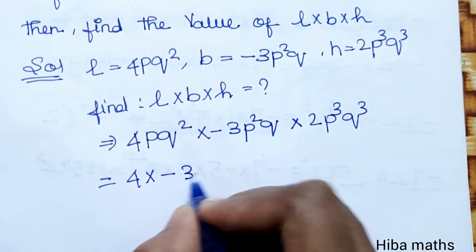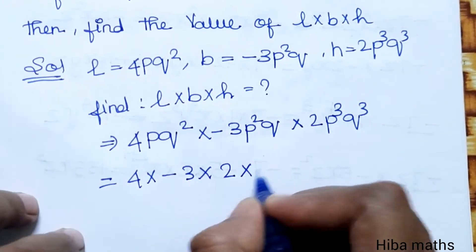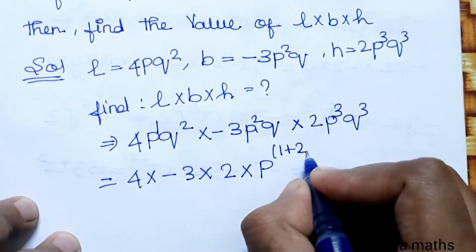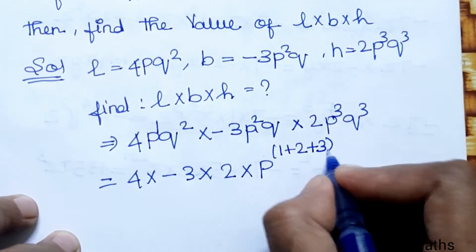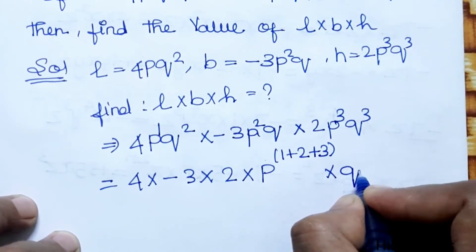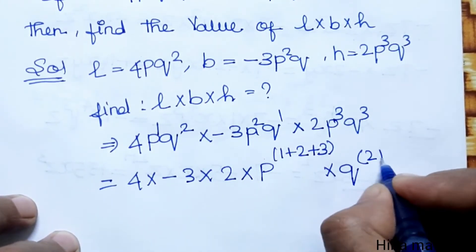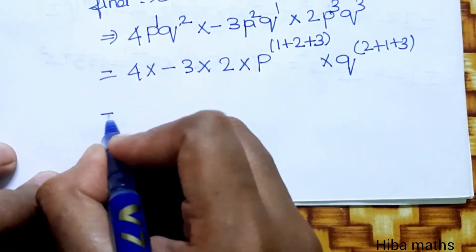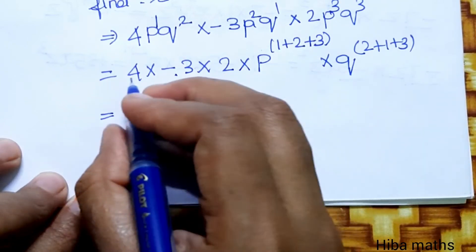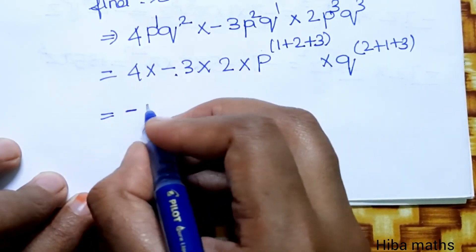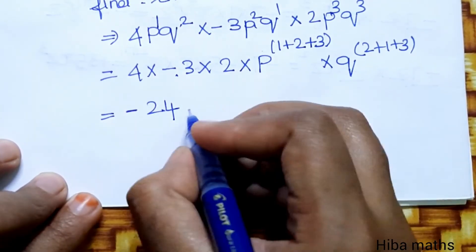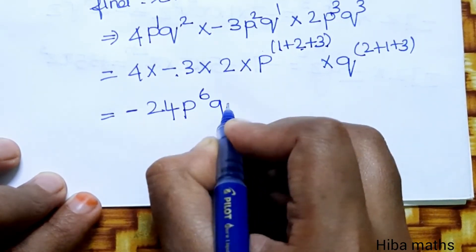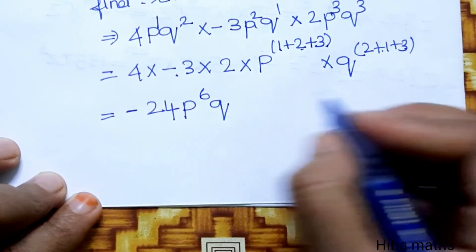Substituting the values of L into B into H: the coefficients are 4 into minus 3 into 2, and the powers of P are P to the power 1 plus 2 plus 3, and the powers of Q are Q to the power 2 plus 1 plus 3. So 4 into minus 3 is minus 12, minus 12 into 2 is minus 24. P power 1 plus 2 plus 3 equals P to the power 6. Q power 2 plus 1 plus 3 equals Q to the power 6. Therefore, L into B into H equals minus 24 P to the power 6 Q to the power 6.